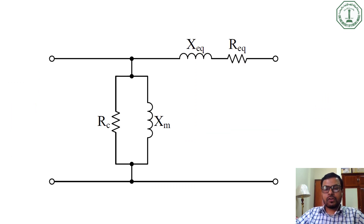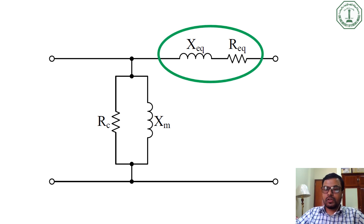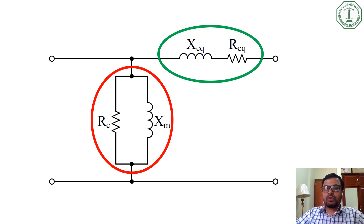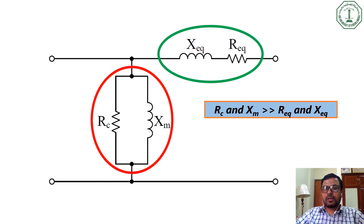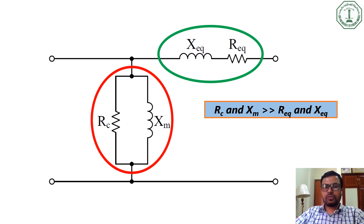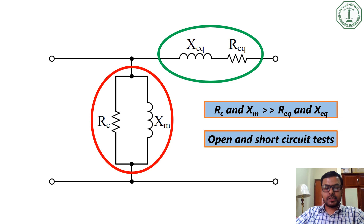From your theory class, you already know that this is the approximate equivalent circuit of a single-phase transformer. The quantities X-equivalent and R-equivalent are related to the copper loss of the transformer, whereas RC and XM are related to the core loss. RC and XM are very, very greater than R-equivalent and X-equivalent. However, to determine these quantities, we have to do the short circuit and open circuit tests.